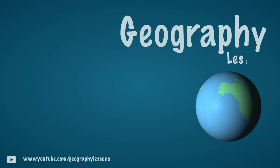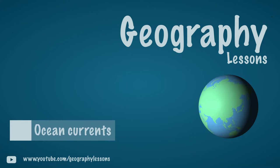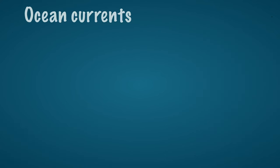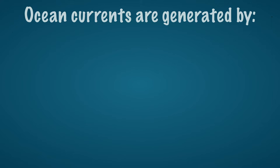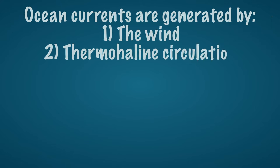The ocean currents and sea currents are called the oceanic circulation, and they are driven in two ways. The first reason is that the ocean currents on the surface are driven by the wind. The other driver is the thermohaline circulation, which will be discussed first.